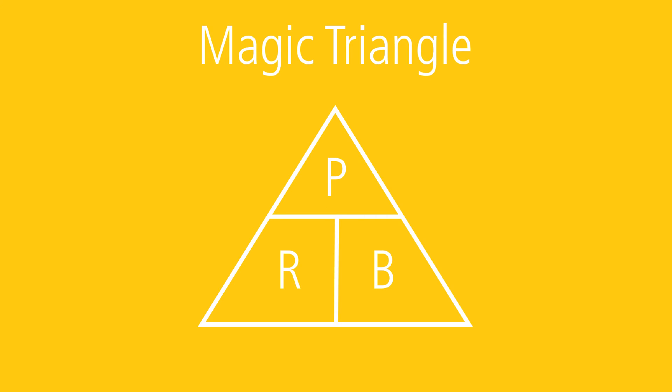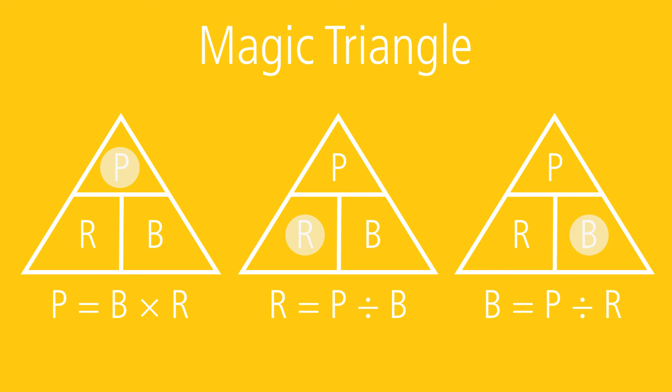Another method for remembering these percentage formulas is the magic triangle that you see here. Remember, the portion is a part of the whole and will always be in the same terms as the base. It is found by multiplying the rate times the base: P equals R times B. The following examples will demonstrate solving for portion.